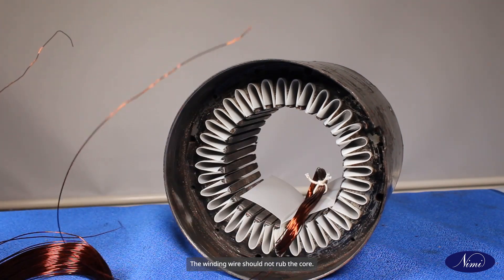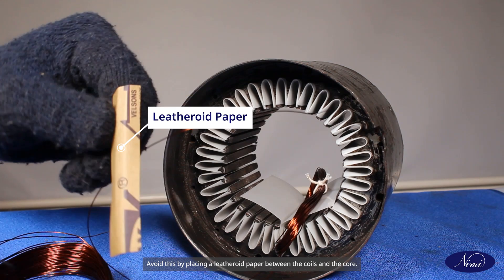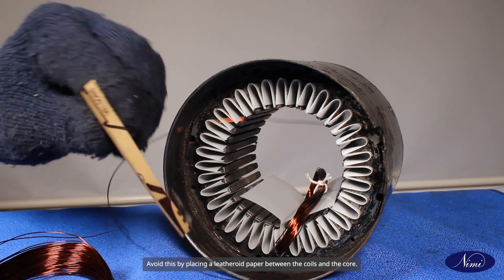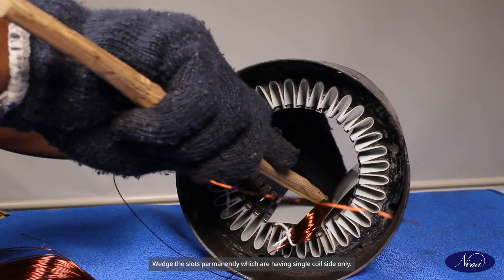The winding wire should not rub the core. Avoid this by placing a leatheroid paper between the coils and the core. Wedge the slots permanently which are having single coil side only.